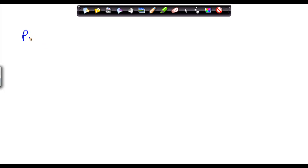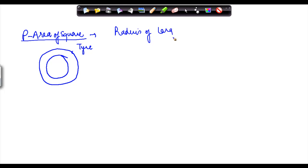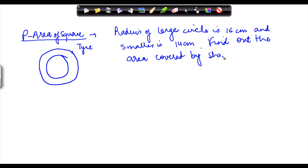Let's take a problem on area of a square. Suppose you are told that there is a tire of a car. It is given that the radius of larger circle is 16 cm and smaller circle is 14 cm. Find out the area covered by shaded portion.